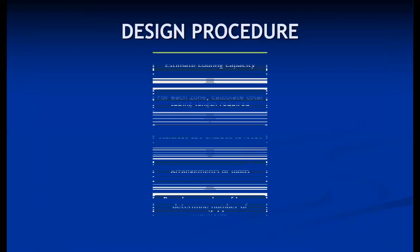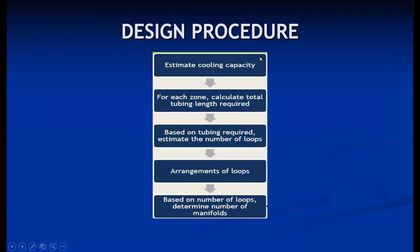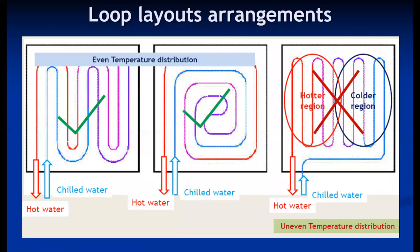Regarding design procedures, for the radiant cooling system: first the cooling capacity is estimated for each zone; then the total tubing length required to meet that cooling capacity is calculated; based on the tubing requirement, the number of loops is estimated; then the arrangement of loops is determined; and finally, based on the number of loops, the number of manifolds required is determined.